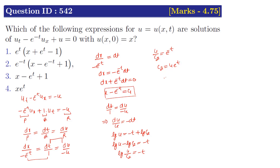The general solution is c₂ = φ(c₁). Substituting the values of c₁ and c₂, we get u · e^t = φ(x − e^(−t)), which implies u = e^(−t) · φ(x − e^(−t)).